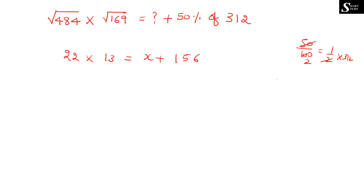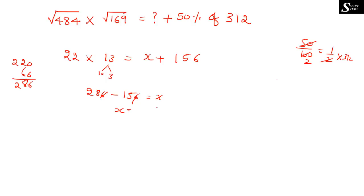Transferring 156 to the other side: x = 286 − 156. Subtracting: 6 − 6 = 0, 8 − 5 = 3, 2 − 1 = 1. So the answer is 130. I hope you understood.